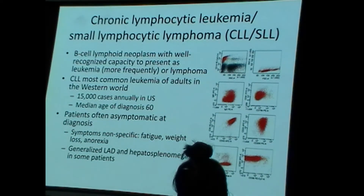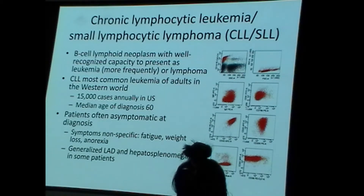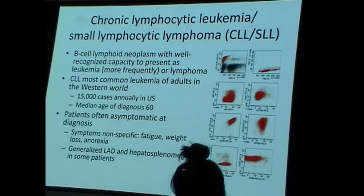Next we'll learn about chronic lymphocytic leukemia, or small lymphocytic lymphoma — CLL/SLL. Again, it can present as either leukemia or lymphoma, but it is the same disease. CLL is the most common leukemia of adults in the western world, and yes, we practice in the western world, so you will encounter it.